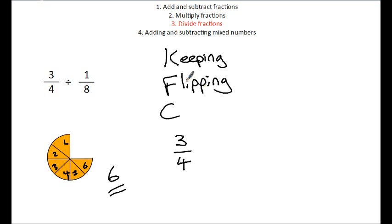Flipping the second fraction. Now what I mean by that is taking the reciprocal. So writing down 8 over 1 rather than 1 over 8. And then changing the sign. So we're going to changing the division sign to a multiplication sign.